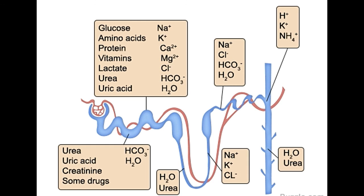The distal convoluted tubule, unlike the proximal, has mitochondria — the power plants of cells — that allow active filtration. Various ions, such as Na⁺, K⁺, and Cl⁻, are reabsorbed into the bloodstream here. The efferent arteriole, which exits the glomerulus having deposited the glomerular filtrate, remains close to the renal tubule in the form of vasa recta, and the reabsorbed substances are integrated into the bloodstream in this fashion.